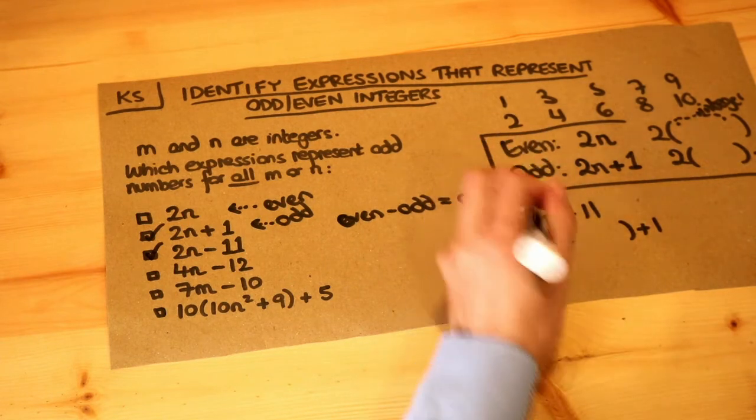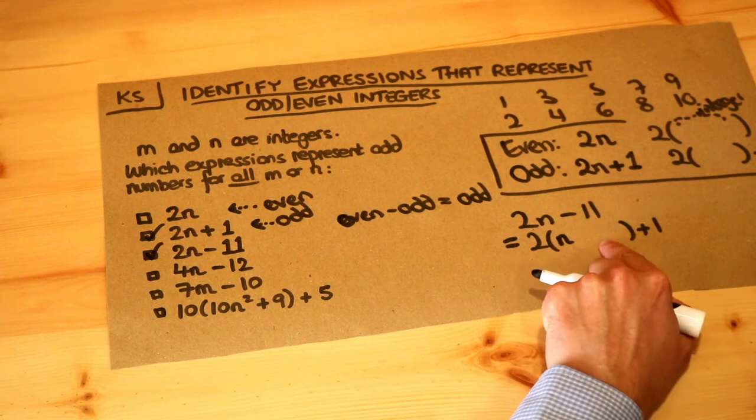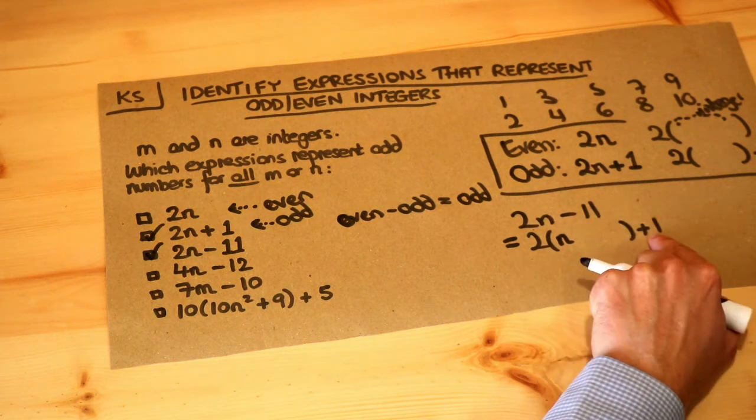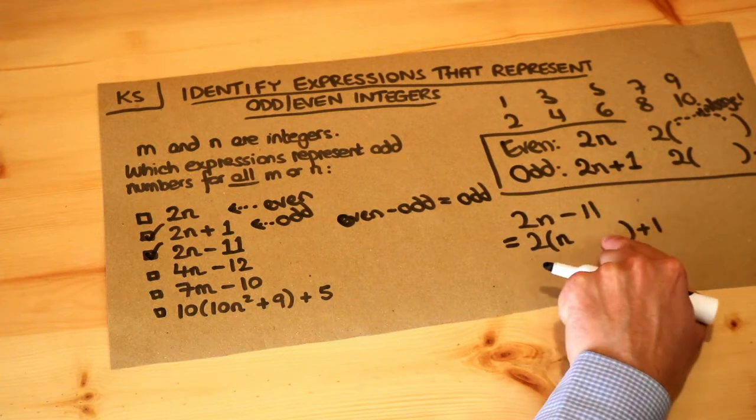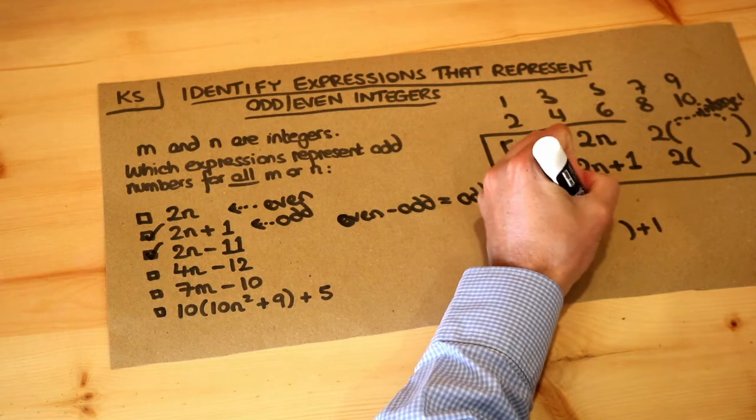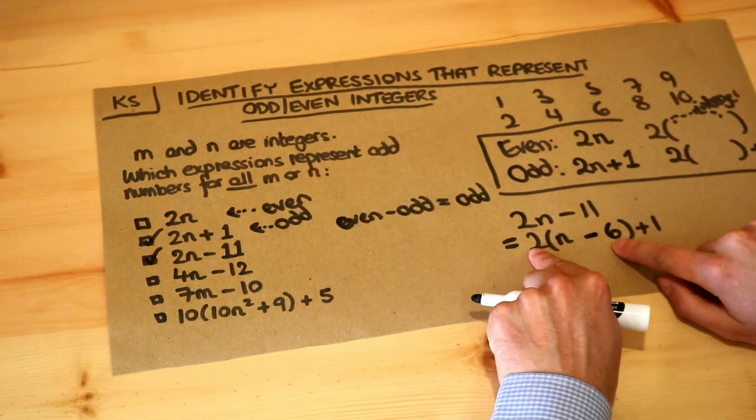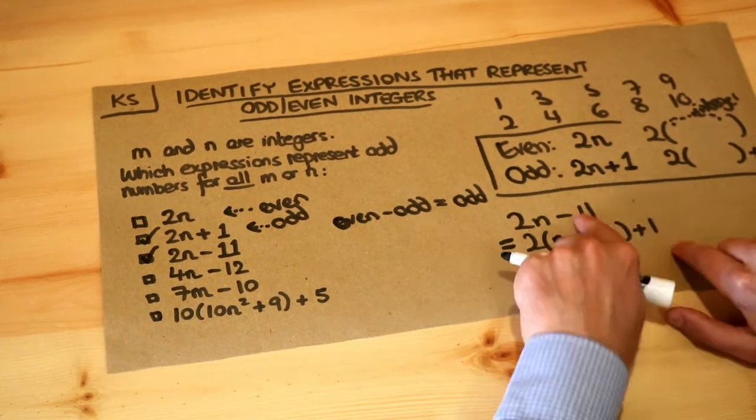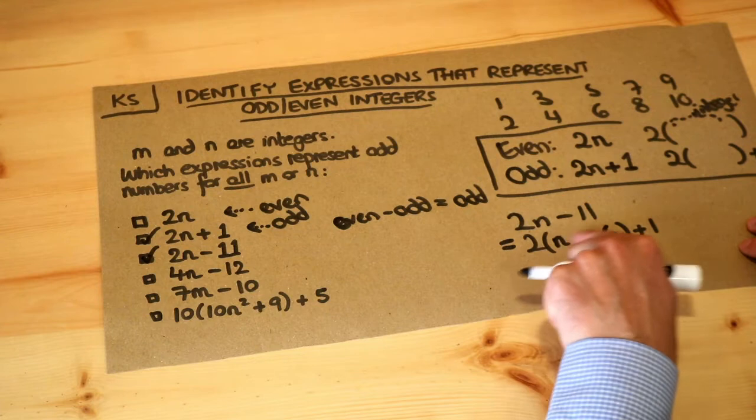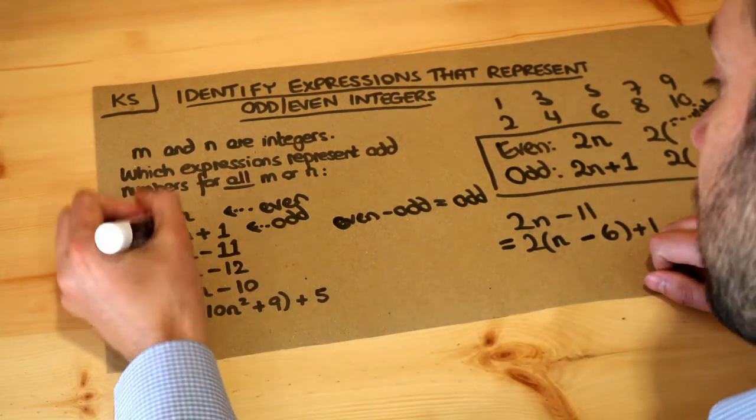Well, we can put n because that will give us 2 times n, which is 2n. Now we need to have 2 times something such that after we add 1 we get minus 11. Now before we add 1 to get minus 11, we must have had minus 12, and 2 times what is minus 12? Well, it's minus 6. So we're just thinking backwards. Let's just check that: 2 times minus 6 is minus 12, plus 1 is minus 11. So we then put it in the form 2 times a whole number plus 1, and that's guaranteed to be odd. So yeah, that's definitely odd.